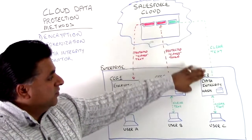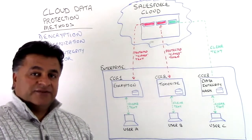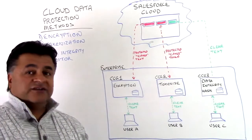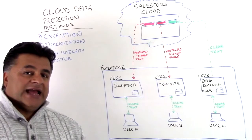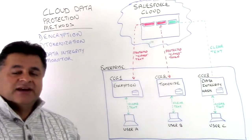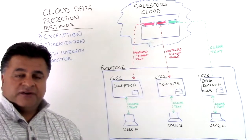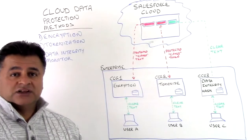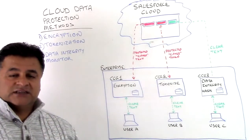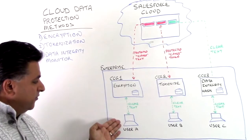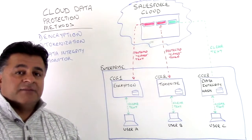So those are three examples of data protection methods: encryption, tokenization, and the data integrity monitor which uses a hash. For encryption, a lot of customers want an encrypted value in Salesforce fields with different rule sets applied to that data. Cypher Cloud's value proposition here, in addition to encryption, is making that information in Salesforce searchable, sortable, and supporting different list views. So while the data is protected in the Salesforce cloud, users can still process it from a clear view, retaining the majority of that functionality.